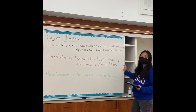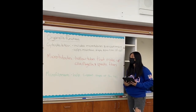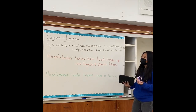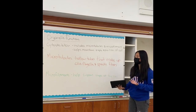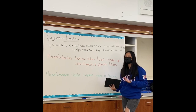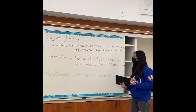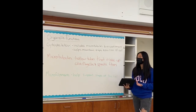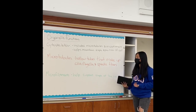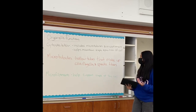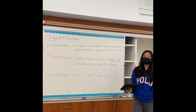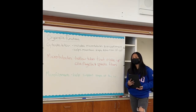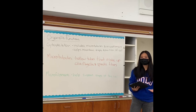Next, I'm going to talk about the cytoskeleton, microtubules, and microfilaments. The cytoskeleton includes microtubules and microfilaments, and it basically helps maintain the shape and position of the cell. Microtubules are hollow tubes that make up the cilia, the flagella, and the spindle fibers. The microfilaments help support the shape of the cell.